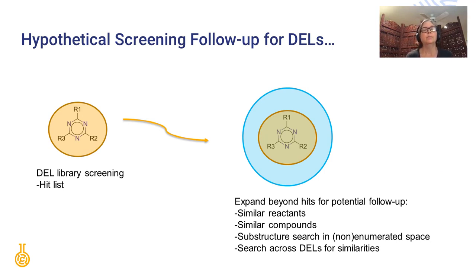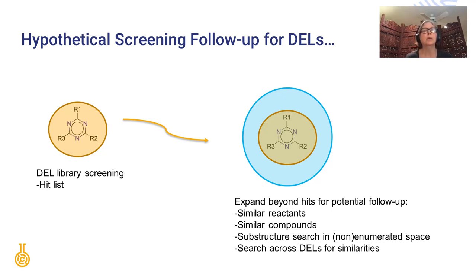Another thing to point out about follow-up on DNA encoded libraries: let's say you've done a primary screening of a DNA encoded library and you have a list of hits. It's always a good idea to go through your library to check for similar compounds which are non-hits. If your hits are sparse and you wish you had more to work with, this similarity searching is one way you could expand your follow-up without having to run a new screen.